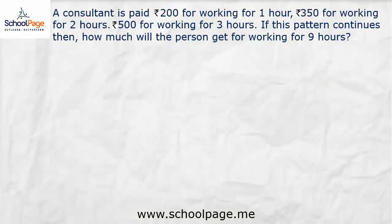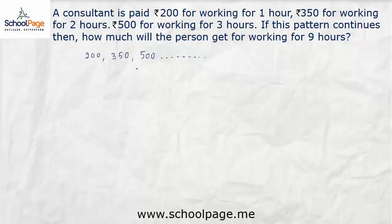Let us take a real-life example. A consultant is paid rupees 200 for working 1 hour, rupees 350 for 2 hours, and rupees 500 for 3 hours. If this pattern continues, how much will the person get paid for working 9 hours? We find d equals t2 minus t1 equals 350 minus 200 equals 150. Since the common difference is constant at 150, this list is in arithmetic progression, with a equal to 200.